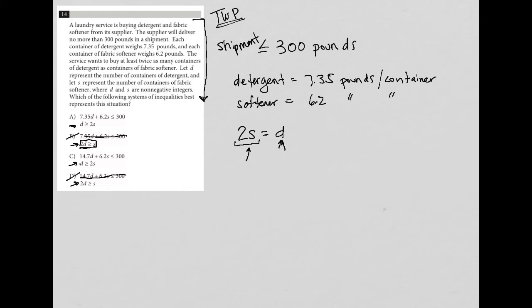So now that my eyes have already used the information from the bottom inequalities, I'm going to focus on the top and look at, I have 7.35 associated with D in answer choice A. I have 14.7 associated with D in answer choice C. But I know that it is 7.35 pounds goes along with detergent. It does not associate with softener.